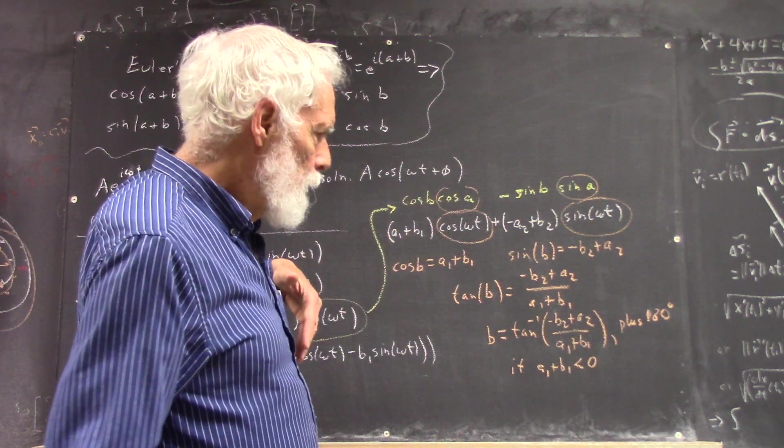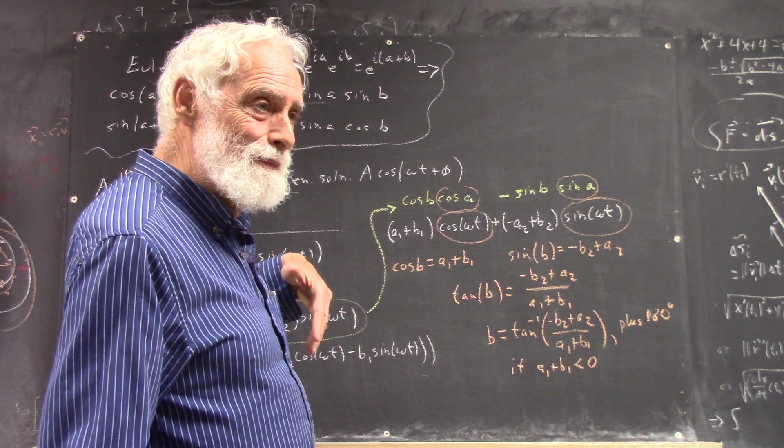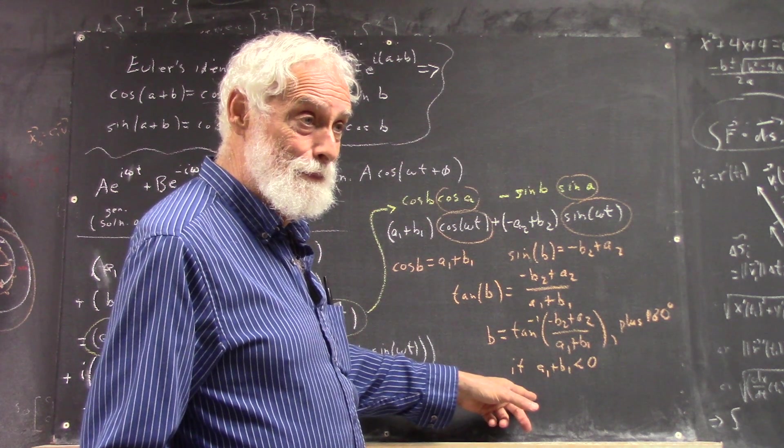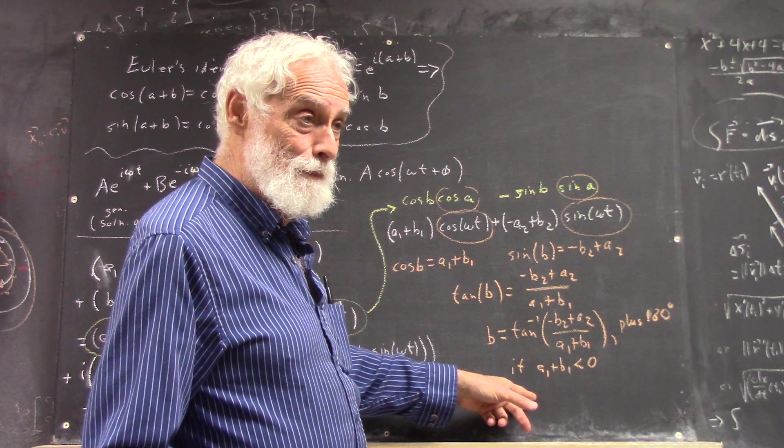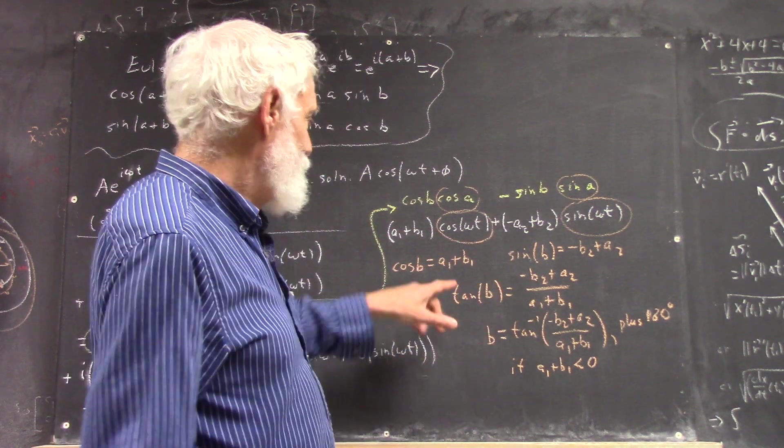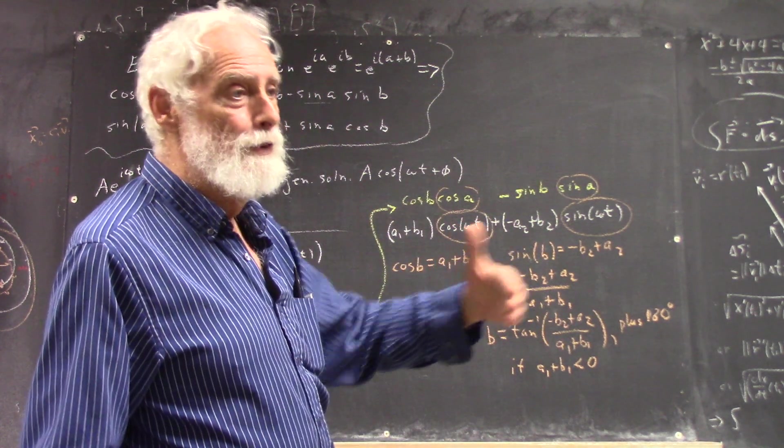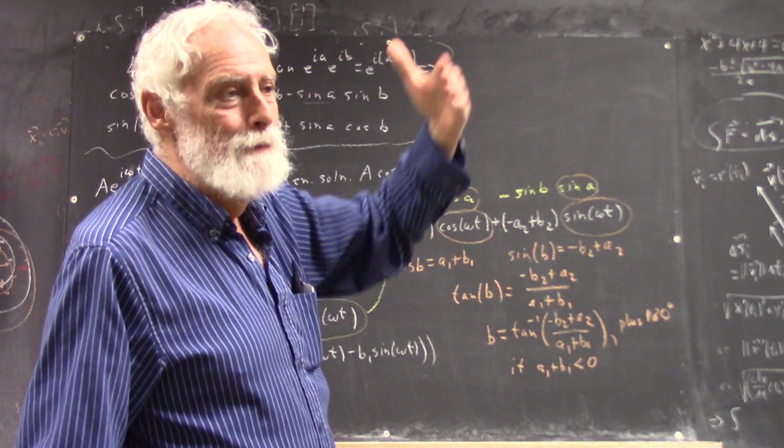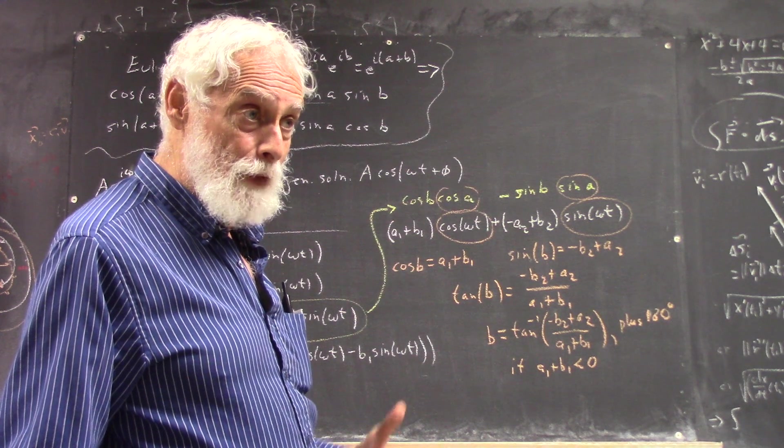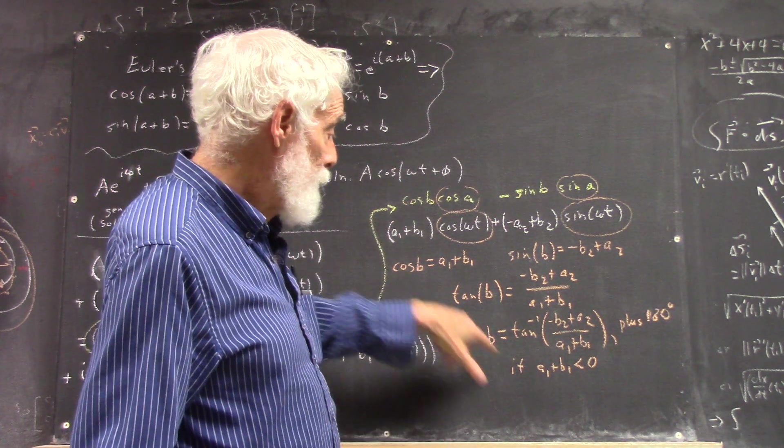So if you're over here where the cosine is negative, it's not going to show up in the arctangent. So you just do a unit circle picture, and you see that if a1 plus b1 is negative, it means you've got to be between angle pi and angle 3 pi over 2, which is diametrically opposite to the angle you get here.